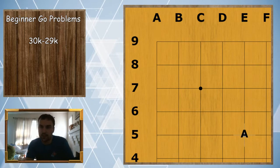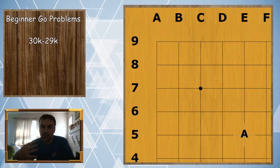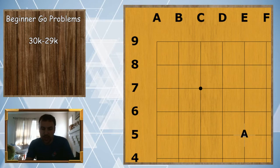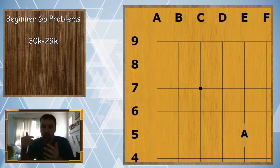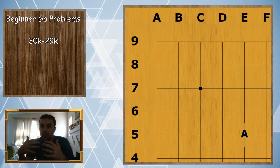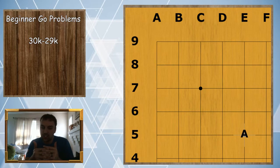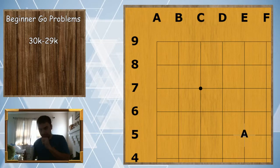The idea is to learn how eyes work and then eventually work your way up to where you're doing life and death problems. You learn how to make two eyes with certain shapes and positions, and that way you can determine if certain groups are alive or dead. Then you can apply that in your own games when you start invading or when someone invades you and a group gets completely surrounded. You'll be able to tell if a group is alive or dead by what eye shape it has.